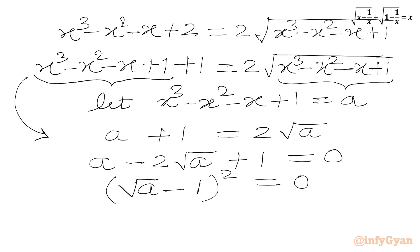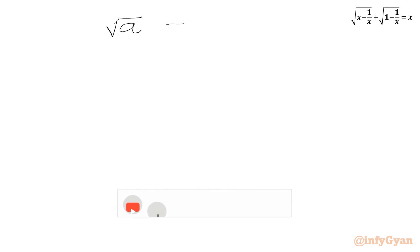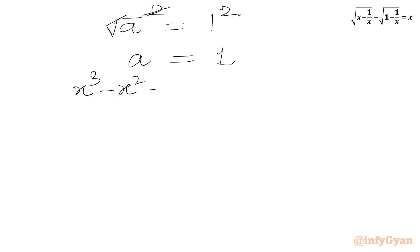RHS is 0. Now we will take the square root of both sides. So we can write: square root of (A) − 1 = 0, or square root of A = 1. Now squaring both sides, square root and square will cancel, and we get A = 1. Now A was our substitution: A = x³ − x² − x + 1 = 1.